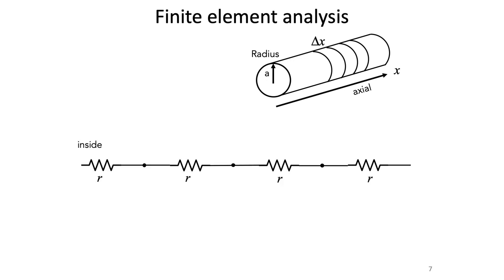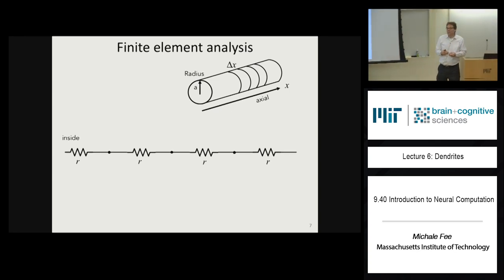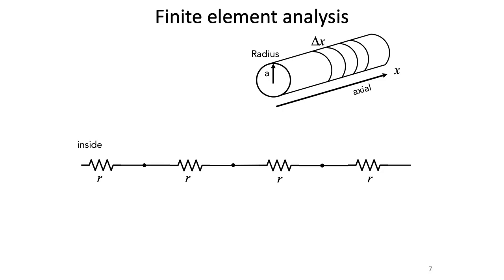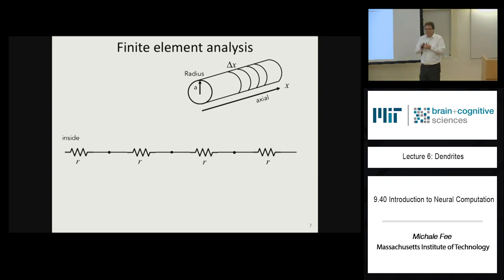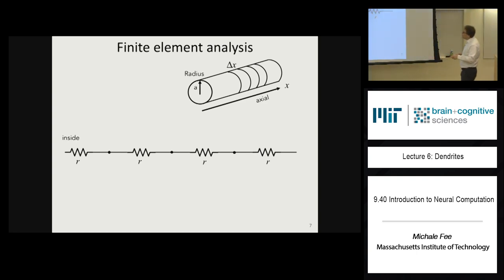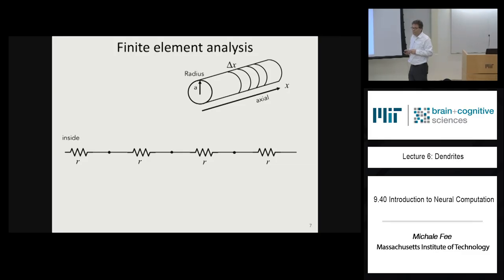Let's start with a model for the inside of the cylinder. In a cell, we modeled the inside by a wire. In a dendrite, we can't just use a wire, because current flowing along the inside of the dendrite will experience voltage drops. So we have to model the resistance of the inside of the dendrite, and we'll model the resistance between each slice with a resistor of value little r.